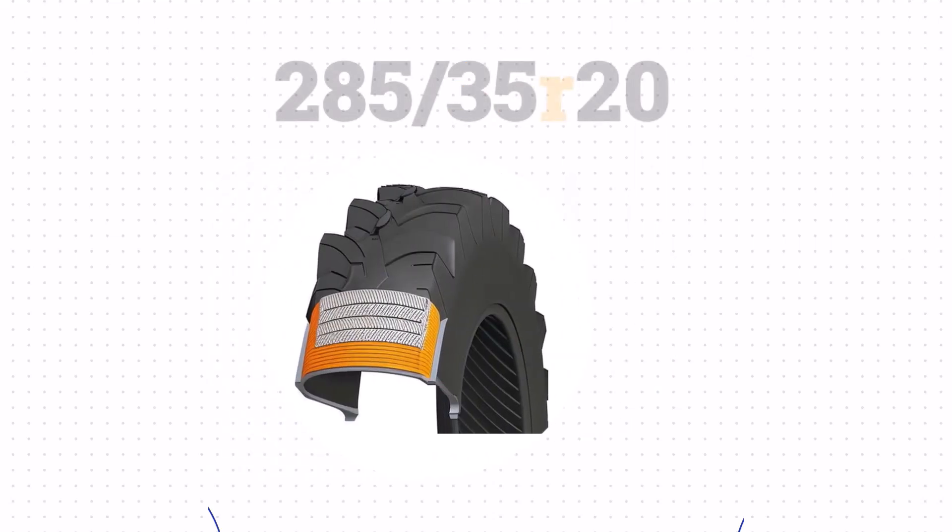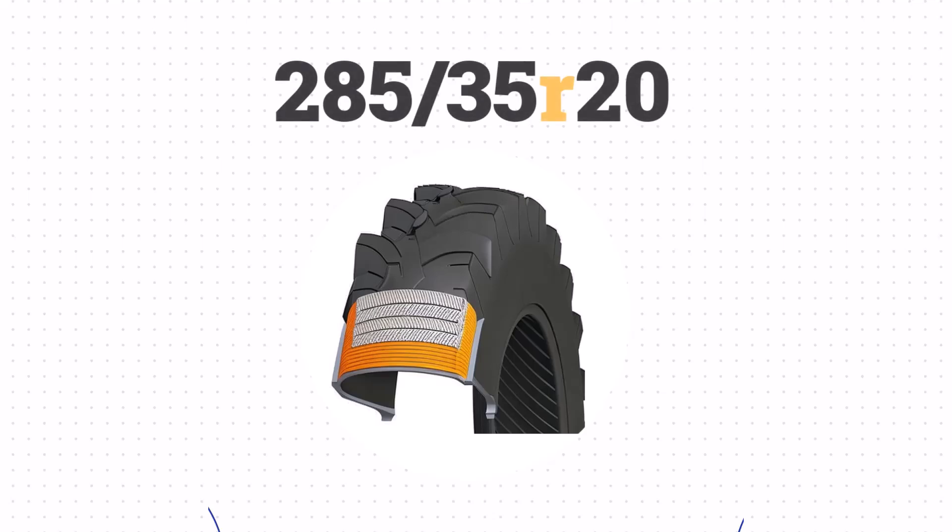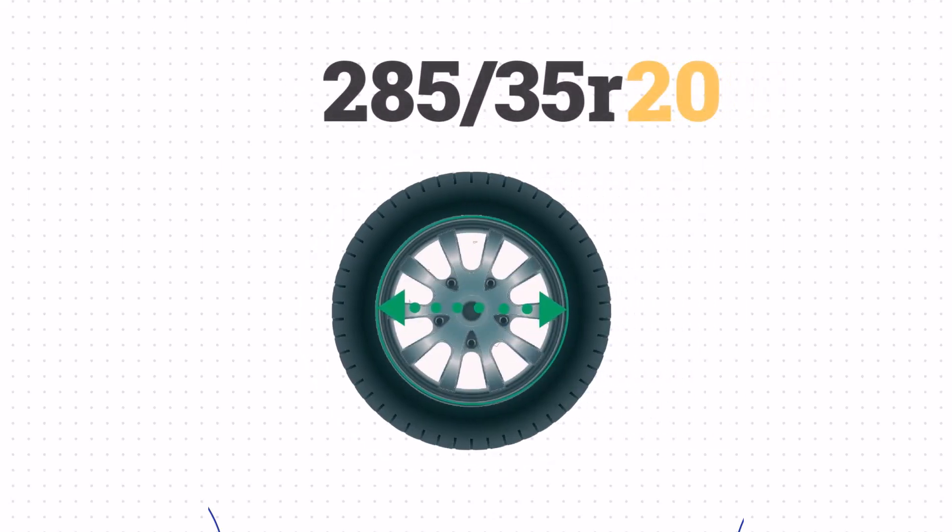The R just means radial construction as opposed to bias ply. And the final number, 20, is the wheel size.